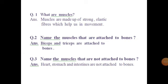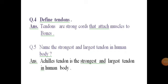Now some question answers: learn them by heart then write in your register. Q1: What are muscles? Muscles are made up of strong elastic fibers which help us in movement. Q2: Name the muscles that attach to bones. Biceps and triceps are attached to bones. Q3: Name the muscles that are not attached to bones. Heart, stomach, and intestines are not attached to bones. Q4: Define tendons. Tendons are strong cords that attach muscles to bones. Q5: Name the strongest and the largest tendon in the human body. Achilles tendon is the largest and the strongest tendon in the human body.